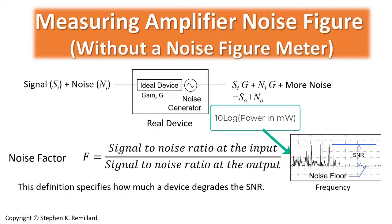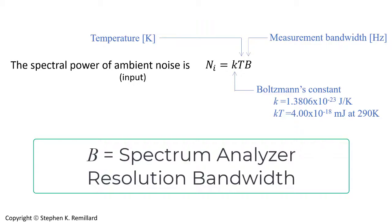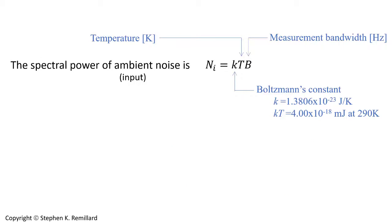The noise power coming into the amplifier or the ambient noise is given by KTB. K is Boltzmann's constant, T is the temperature, B is the measurement bandwidth which I always keep at one Hertz. This noise power is boosted by the gain.